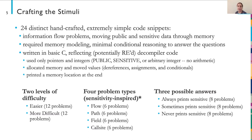We handcrafted 24 distinct simple code snippets. They were information flow problems moving public and sensitive data through memory. Each required memory modeling and a little bit of conditional reasoning to answer the questions. All were written in basic C, reflecting effectively decompiled code. Each used only pointers and integers. Integers could be a public value, a sensitive value, or an arbitrary integer. We did not use any arithmetic. Each problem allocated memory and moved values using only dereferences, assignments, and conditionals, and then printed a memory location at the end. Of the 24 problems, 8 always printed sensitive information, 8 sometimes did, and 8 never did.